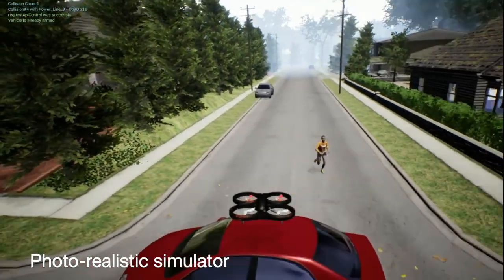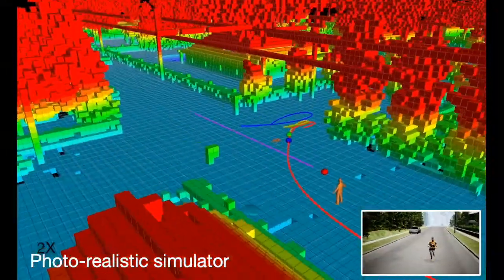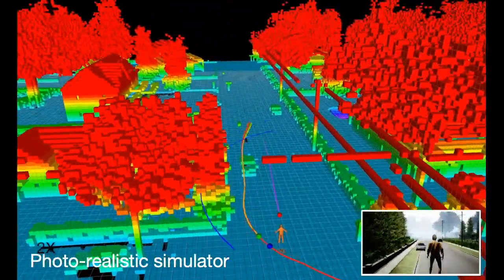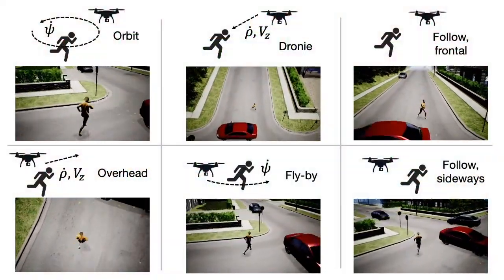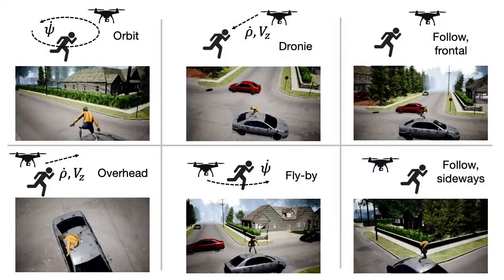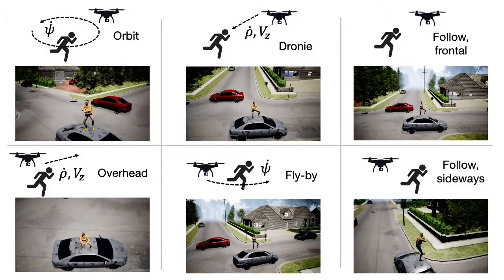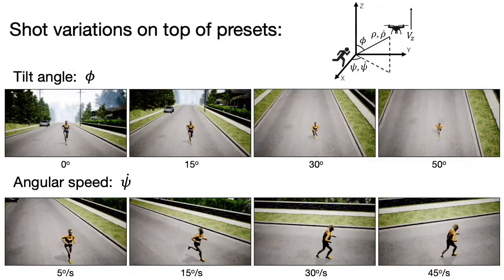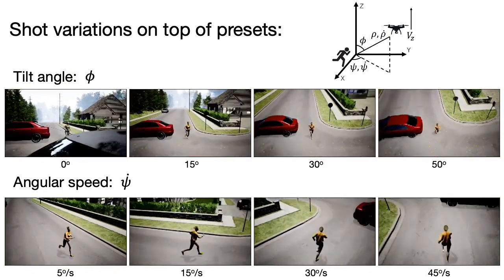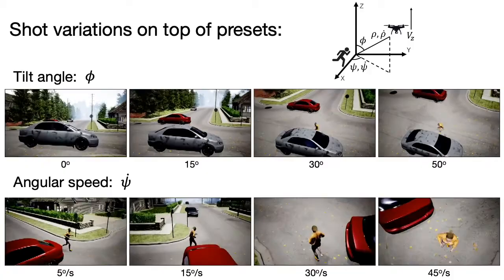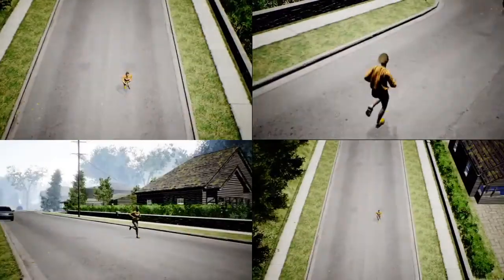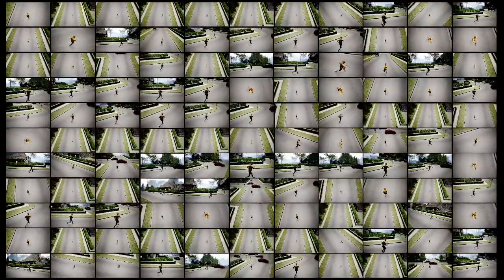We produce all of our data in a photorealistic simulator where we have an underlying motion planner that is able to avoid objects like trees, houses, and wires. We produce our shots using six presets that are commonly found in drone cinematography. On top of the presets, we produce several variations of the camera's positioning parameters — two examples being tilt angle variations and angular speed variations — producing over 200 videos in total using all permutations of parameters.